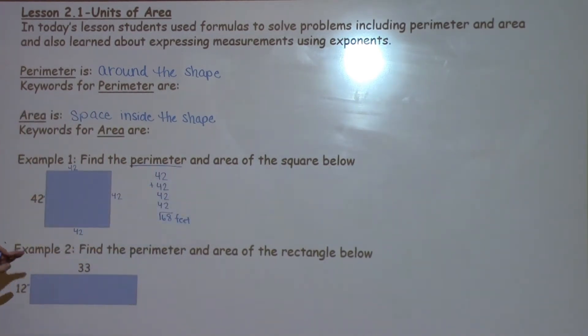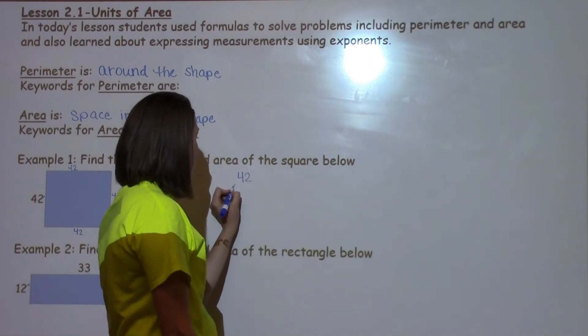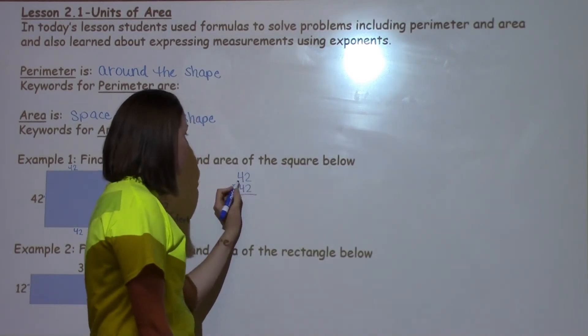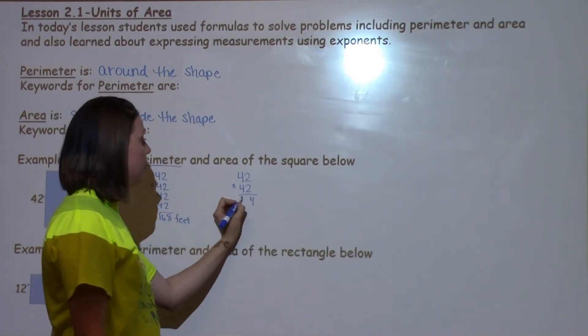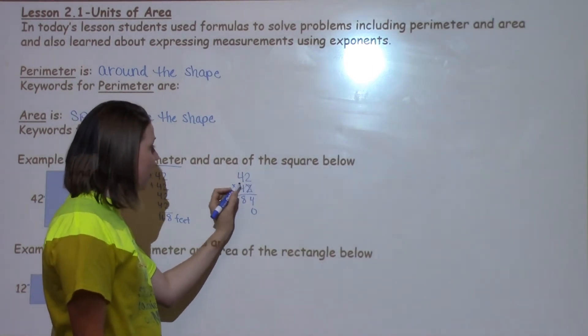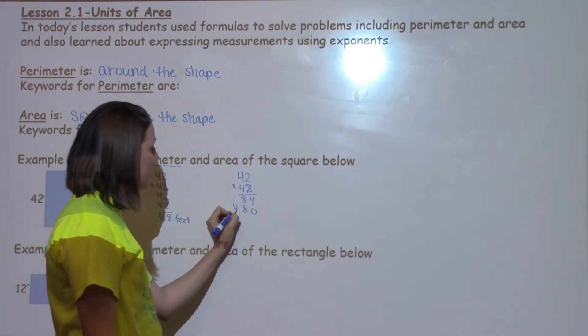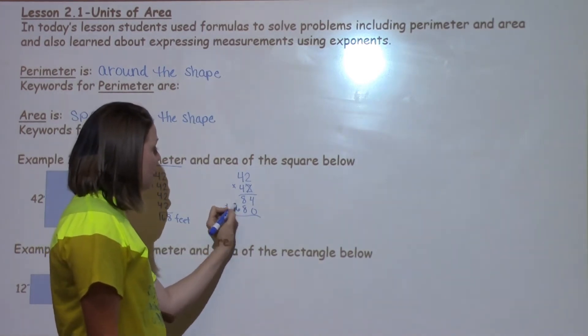Now to find the area of the square, I'm going to take 42 times 42. I'm going to take the length times the width. So 42 times 42. 2 times 2 is 4, 4 times 2 is 8. Go ahead and put my 0 down for my placeholder, cross off the 2. 2 times 4 is 8, 4 times 4 is 16.